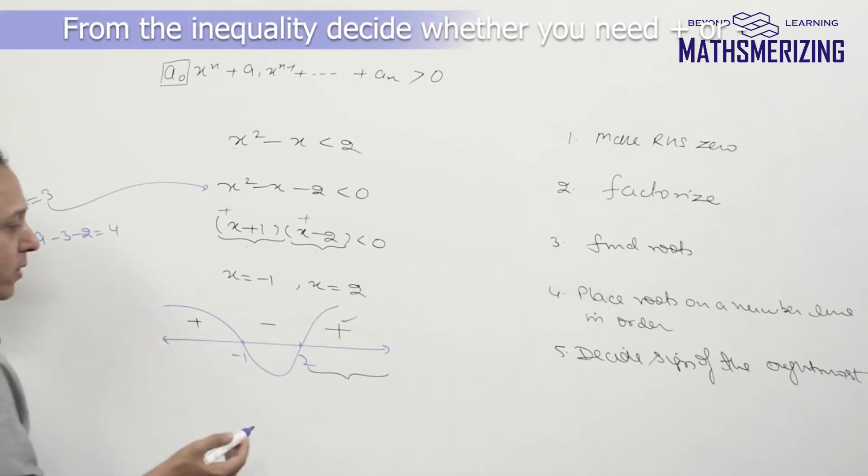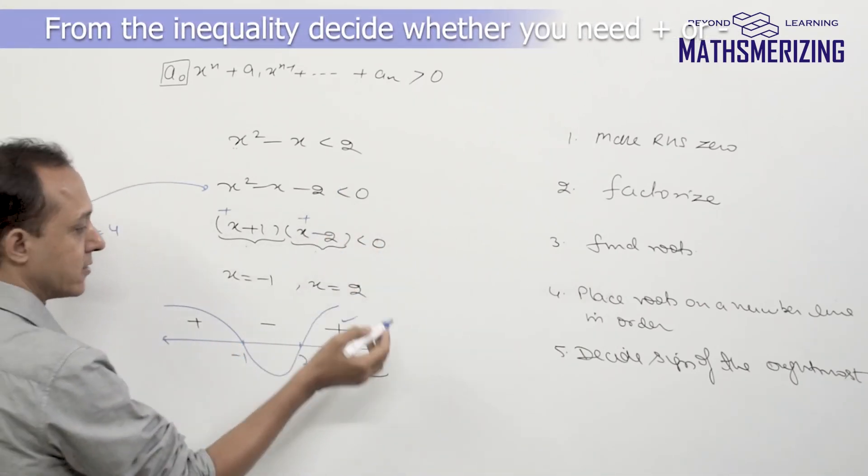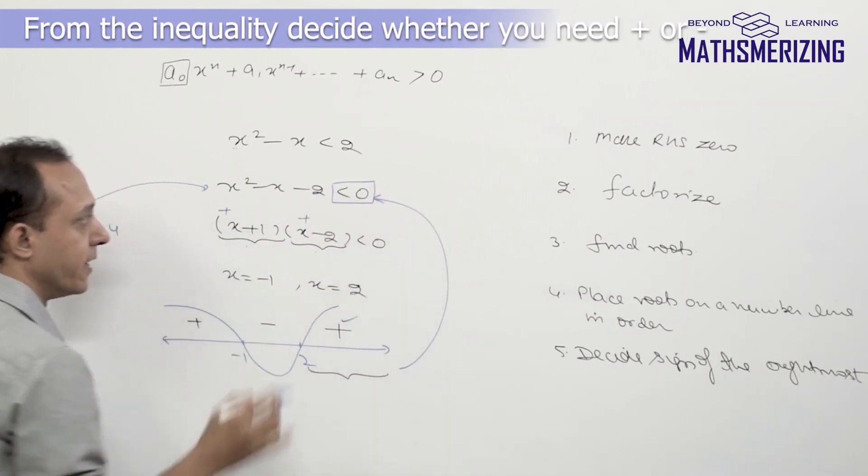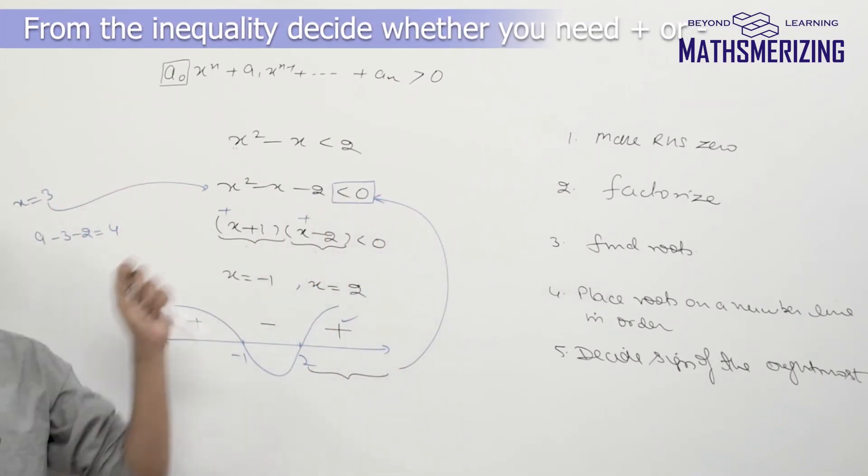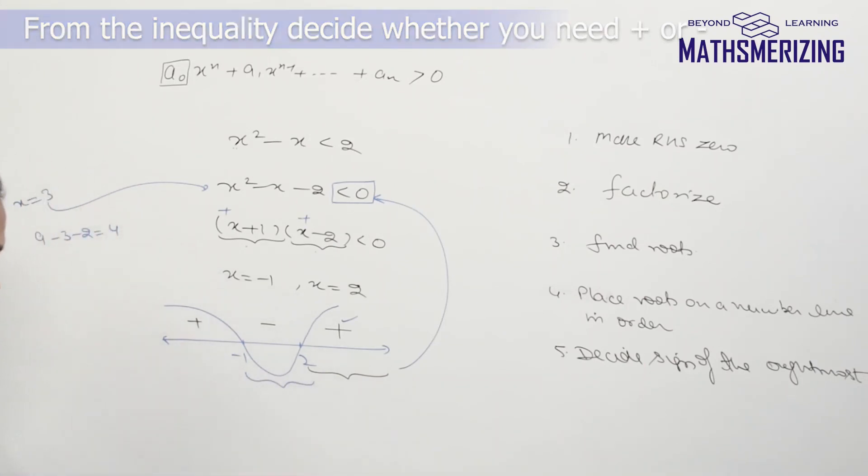So I'll go back to my inequality and find out whether I need a plus sign or a minus sign. My inequality says it should be less than 0. Now less than 0 is obviously negative. So what I'm looking for is all the values of x for which this expression takes a negative value. This expression takes a negative value in this interval from -1 to 2.